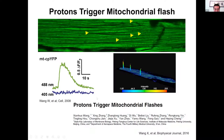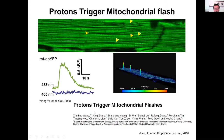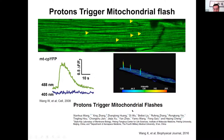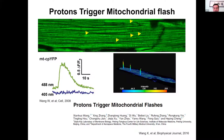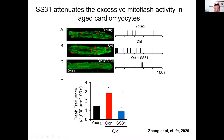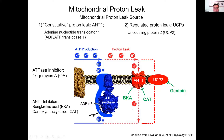Recent studies showed that protons going into the mitochondrial matrix through the inner membrane can trigger mitochondrial flashes. We therefore hypothesized whether increased mitochondrial proton leak can trigger more flashes. In line with the increased proton leak, we see increased mitochondrial flash activity in the old cardiomyocytes.